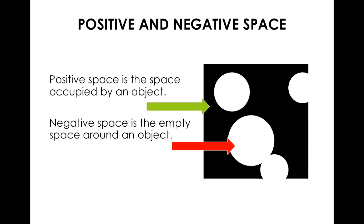Let's talk about different types of space. There is positive and negative space. The green arrow is showing an example of positive space. Positive space is the space occupied by an object. Negative space is the space around the object.